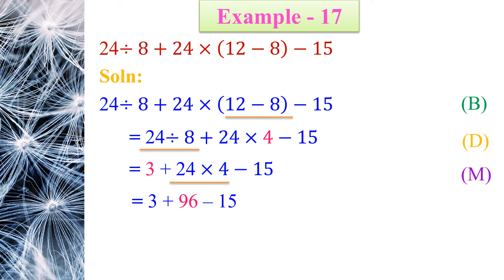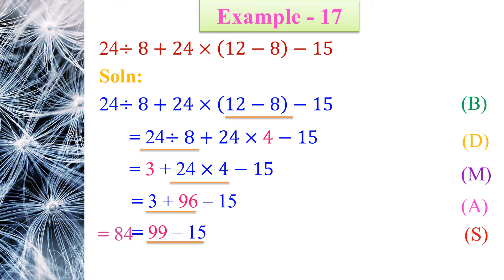The next step is A for addition. On adding 3 + 96, we get 99 − 15. On subtracting, we finally get 84 as the answer.